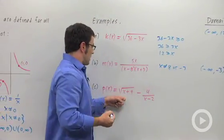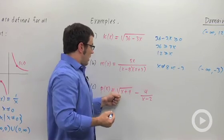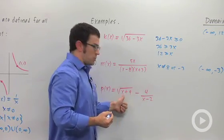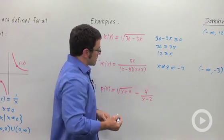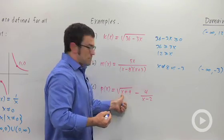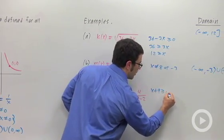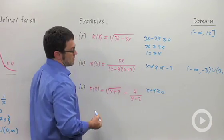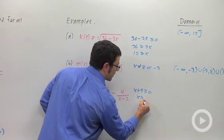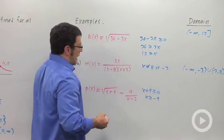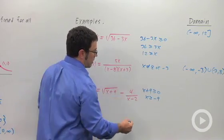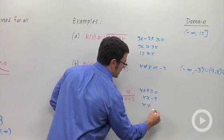And finally, here we have a hybrid between radical functions and reciprocal function. Here, x plus 9 has to be greater than or equal to 0 in order for this part of the function to be defined. So x is going to be greater than or equal to negative 9. And then for this part to be defined, we can't have x equal to 2.